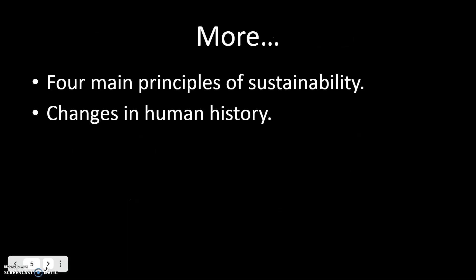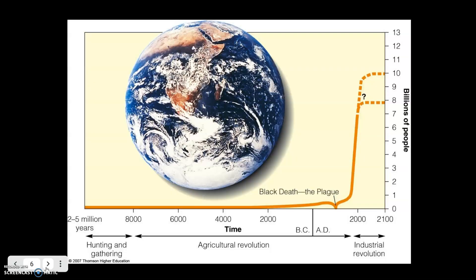The principles of sustainability — what is sustainability? It's the idea of using resources in such a way that you get what you need but don't overextend so that future generations won't also have them. That's not a potential problem; it is a problem based on our living choices right now.